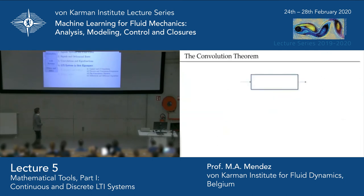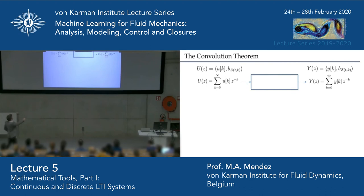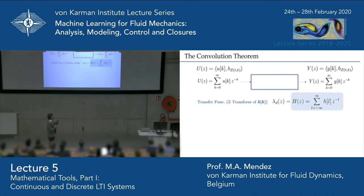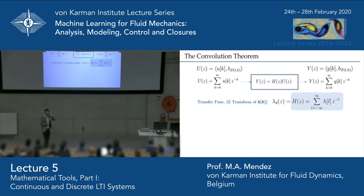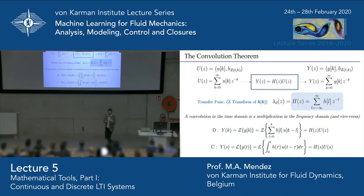The convolution theorem follows: project the system into the eigenfunction basis by taking the Z-transform of input and output. For every frequency, the system responds by simple multiplication by the transfer function — a collection of eigenvalues, one per frequency. Therefore, convolution in the time domain corresponds to multiplication in the frequency domain. Equivalently, convolution is polynomial multiplication, which leads to elegant algebraic properties.